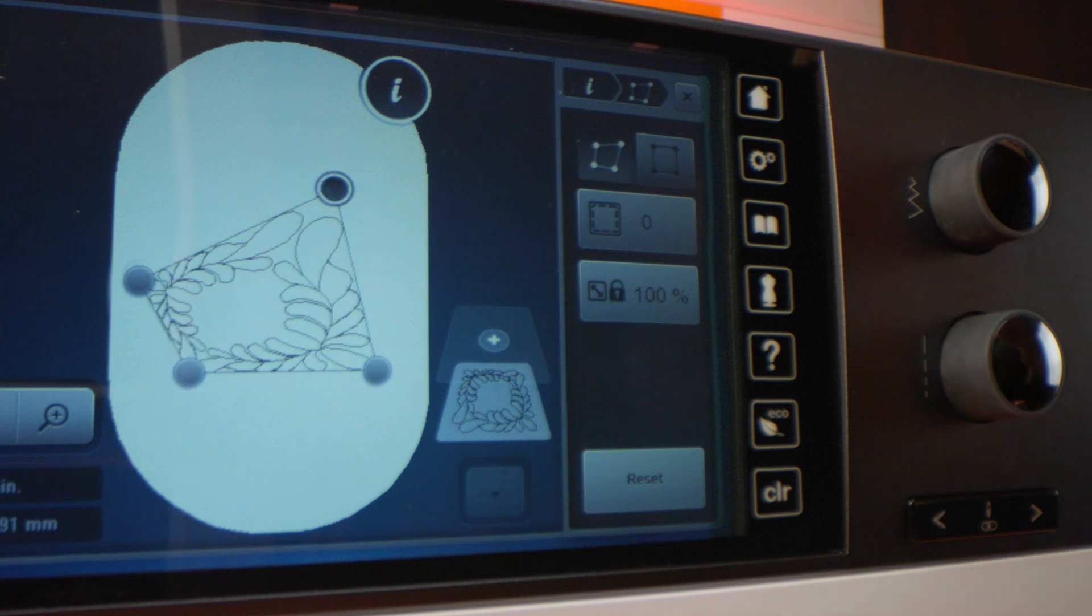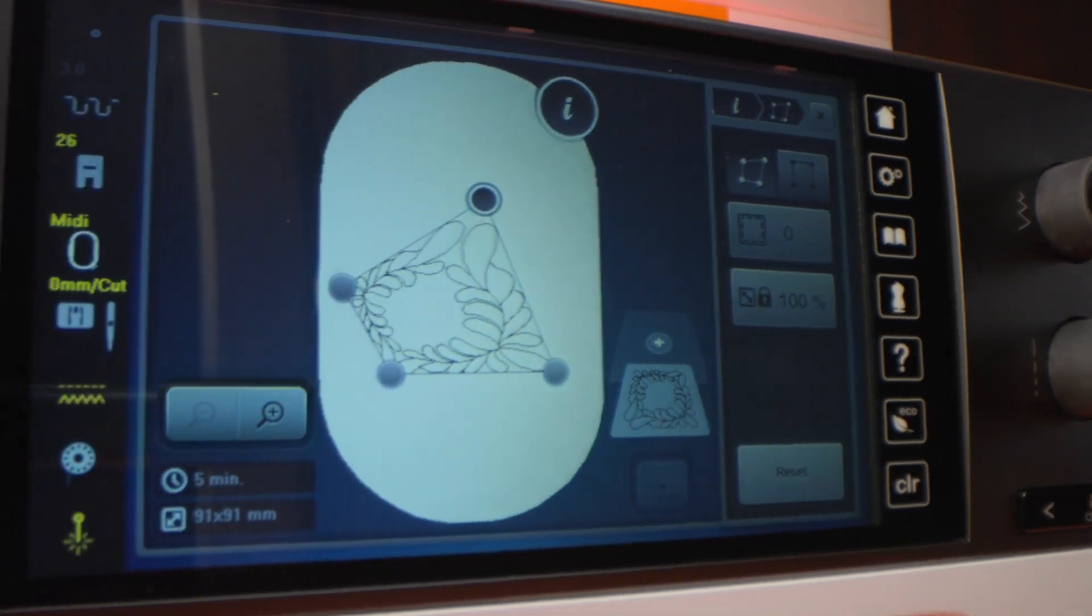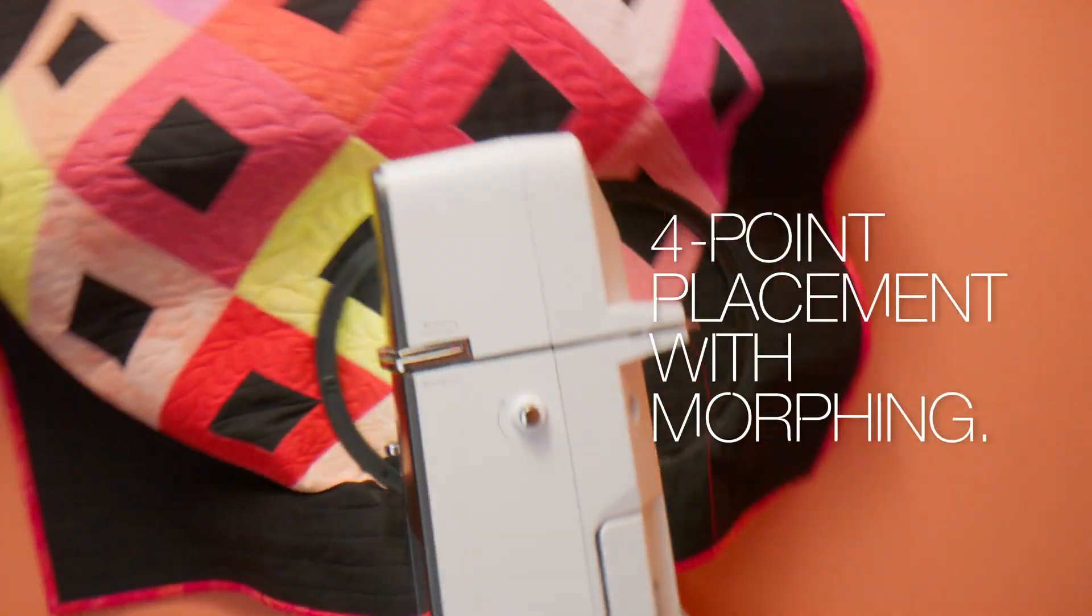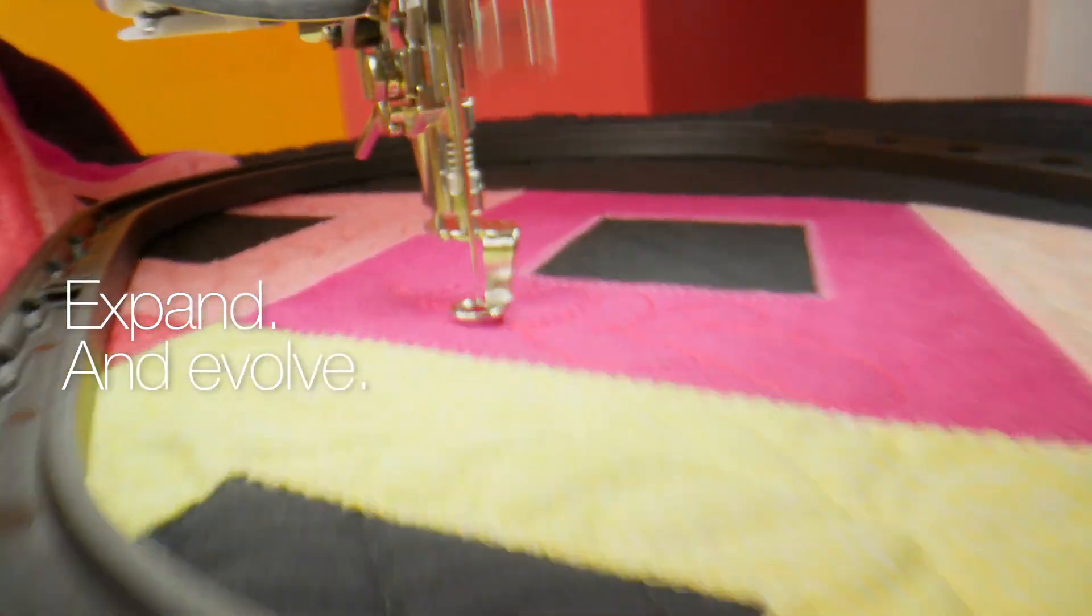The joy of evolving on the go. The four point placement function on the B790 Pro allows you to morph your designs to precisely suit your project.